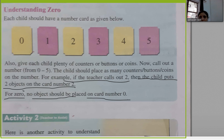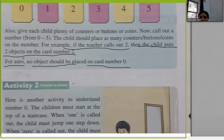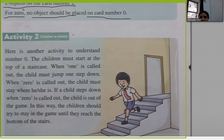For zero, no object should be placed on card number zero. We start counting from zero but zero itself represents nothing.